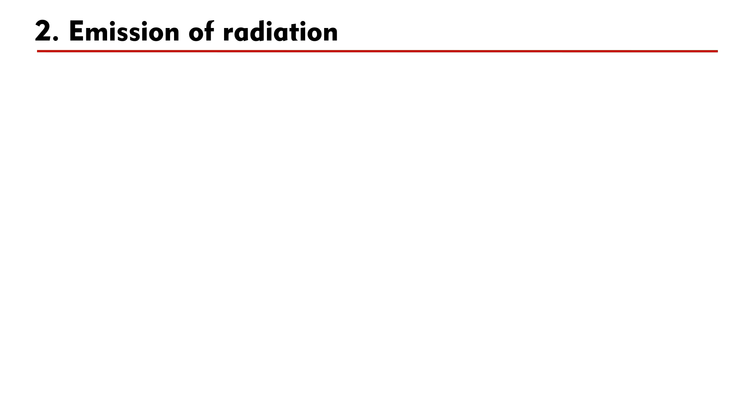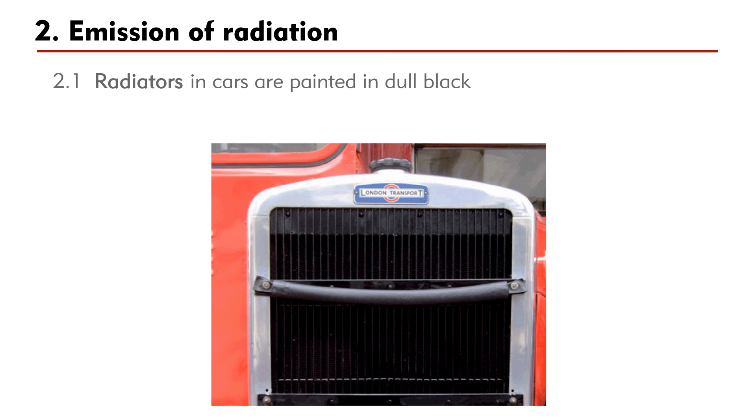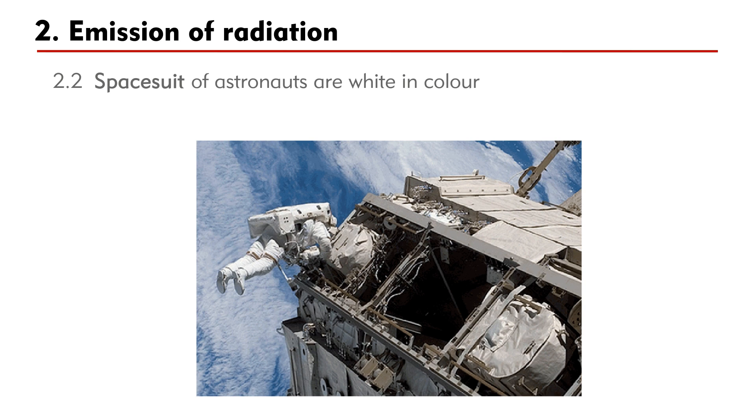Again, this result has important implications. For example, firstly, radiators in cars are painted in dull black to remove excessive heat efficiently. Secondly, spacesuits of astronauts are white in color. This prevents heat loss by radiation.